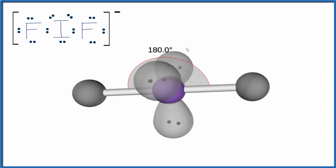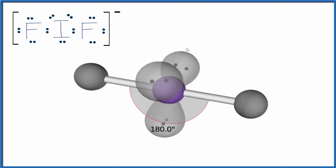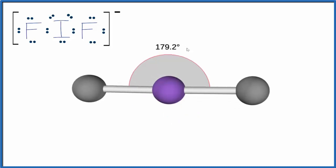The bond angle, that's going to be 180 degrees. So if we hide the lone pairs, you can see that linear molecular geometry for IF2-.